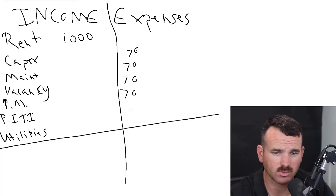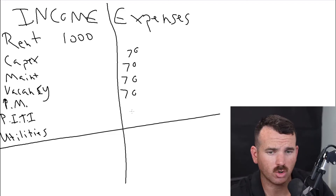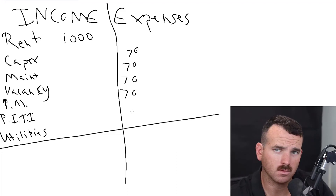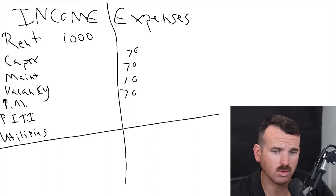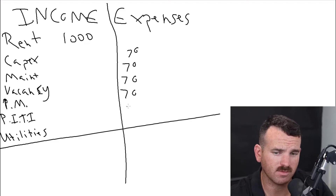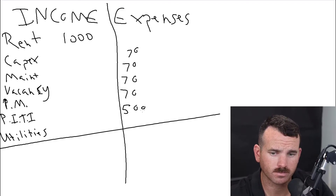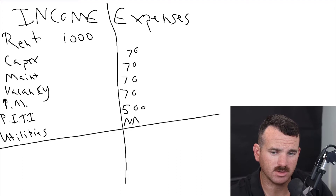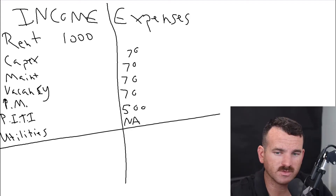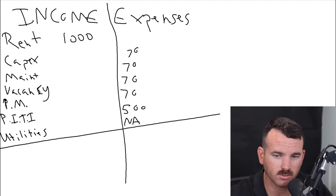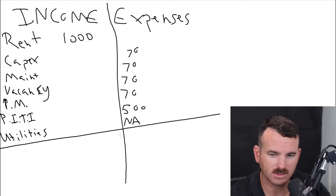Let's say it was a $100,000 home and all of that comes in at a grand total of $500. And let's say that the tenant pays utilities on this one. So that puts us at $70, $140, $280, $780.